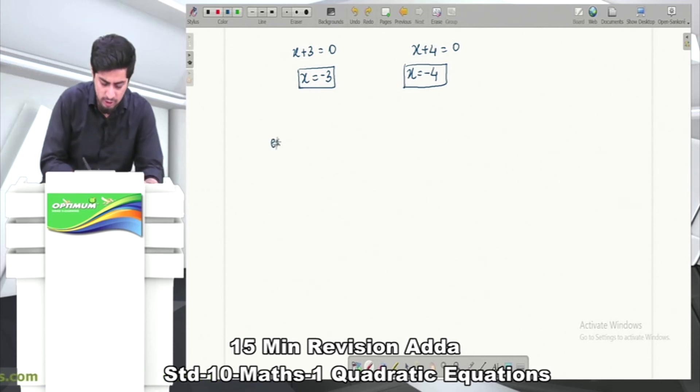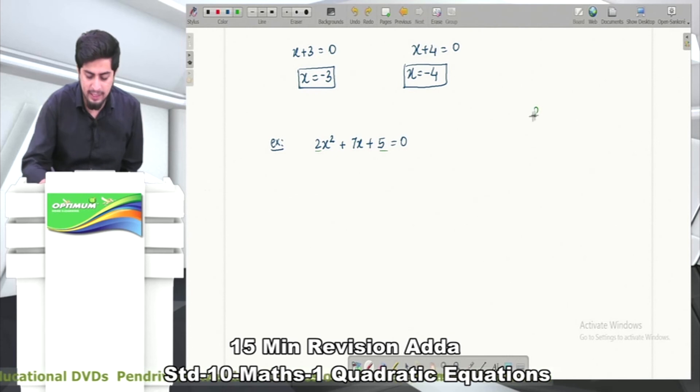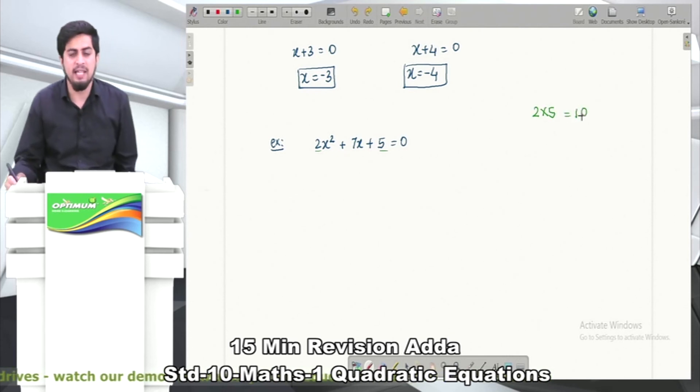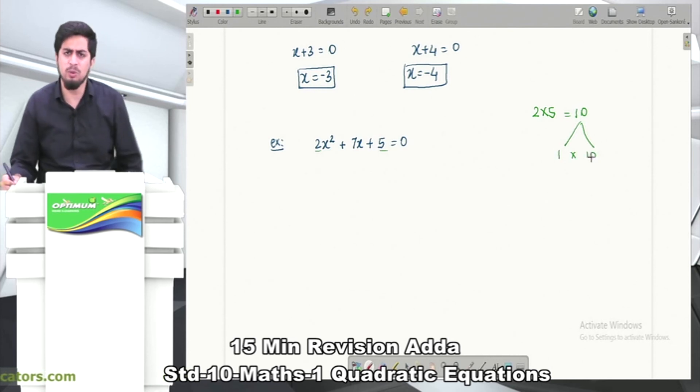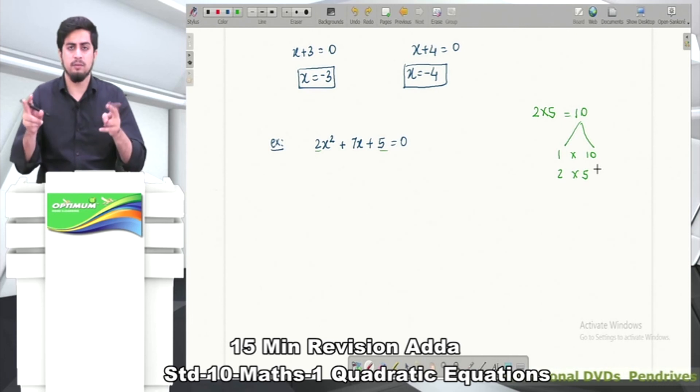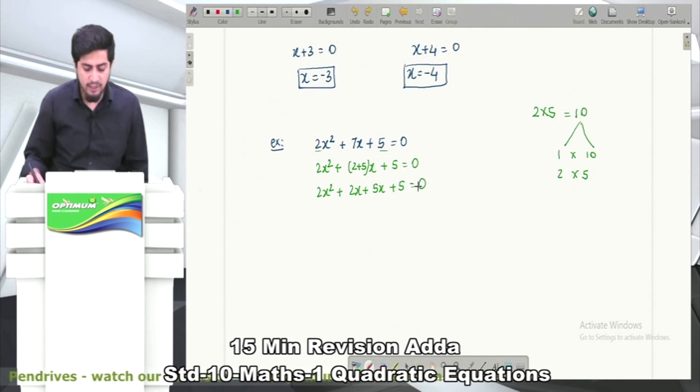Let me give you one more example. Let's say the example is 2x² + 7x + 5 = 0. What do we do? Very simple - multiply the first and last number: 2 × 5 = 10. Now we need to split 10 such that we get 7. Start with 1: 1 × 10 - does this combination give 7? No. Start with 2: 2 × 5 - does 2 and 5 give me 7? Yes, of course. So we can write 7 as 2 + 5. So 2x² + 2x + 5x + 5 = 0.